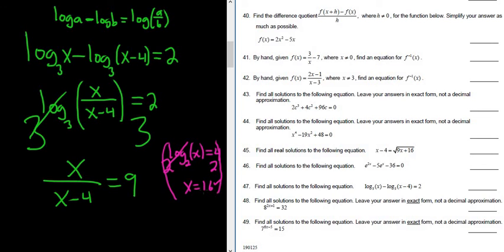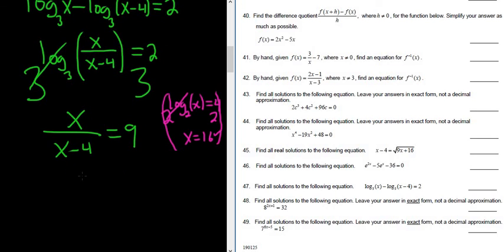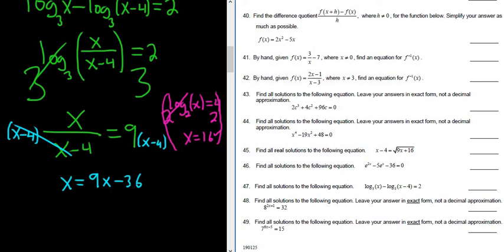Super powerful. So now we're here looking for x. Since x is on the bottom, we can multiply both sides by x minus 4 to clear the fraction. These cancel, giving x equals 9x minus 36. Then subtract 9x from both sides to get negative 8x equals negative 36.